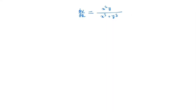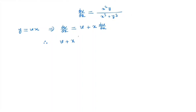So we solve this problem by the method of homogeneous coordinates. For that we substitute y = vx. So the derivative dy/dx is equal to v plus x dv/dx. Putting this in the equation, we have v plus x dv/dx is equal to x²(vx) divided by (x³ + v³x³).